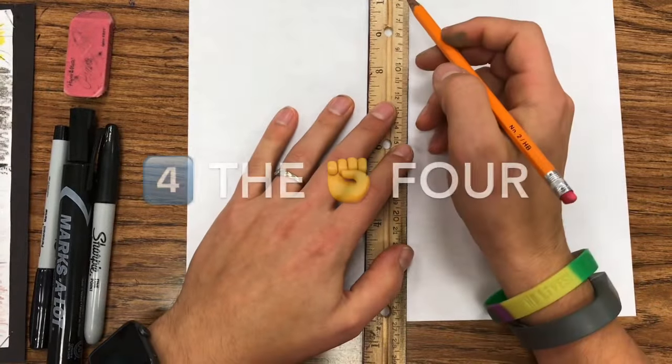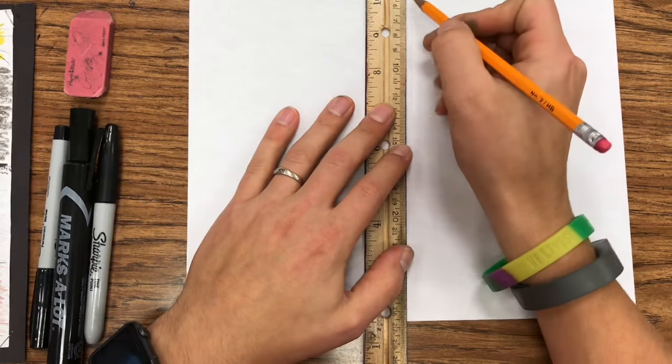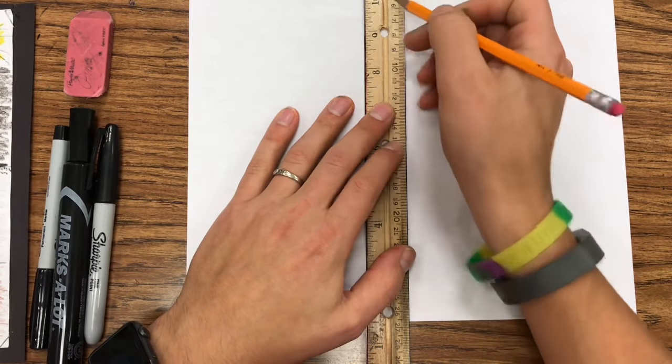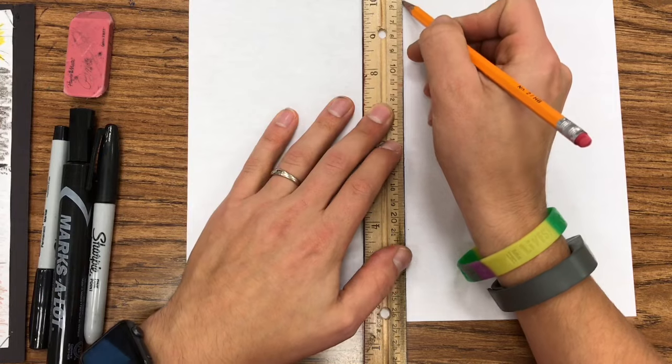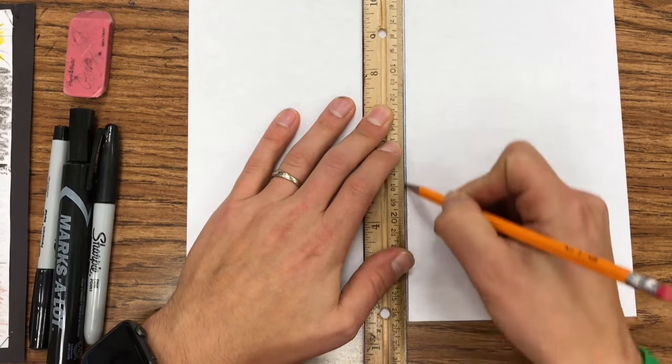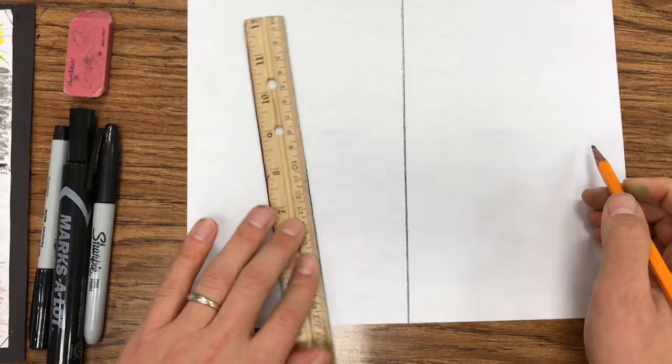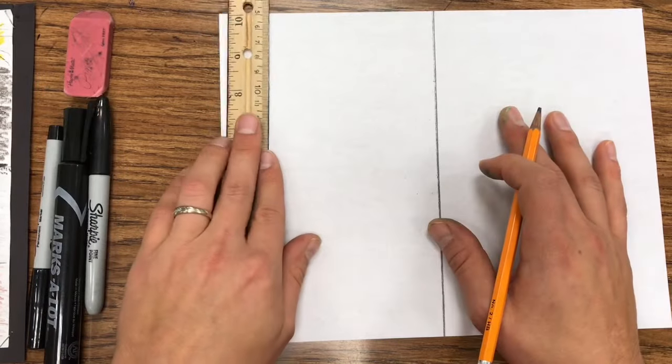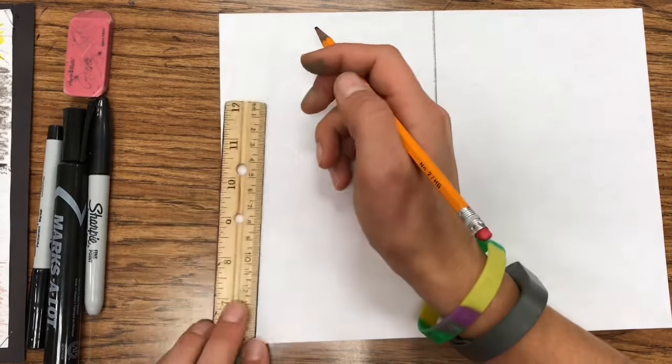So for the four quadrants, I do a line down the middle of the paper with the ruler. Try to get it as close to the middle as you can—it does not need to be perfect. That's the line down the middle, about the size of the ruler.